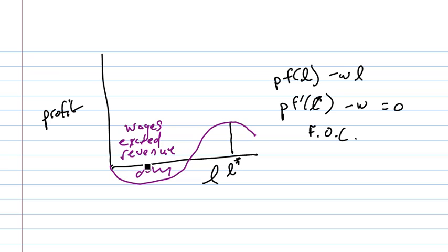If you look at this point down here, I'm going to call this L hat. That L hat also has derivative zero. That's a profit min point. So we need to differentiate between the profit max point and the profit min point, and we do that through the second order condition.